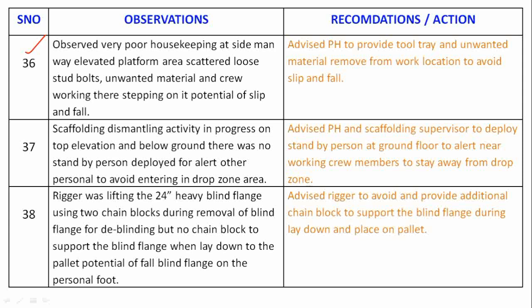Observation 36: Observed very poor housekeeping at the sideman way elevated platform area, with scattered loose studs, bolts, and unwanted material, with crew working there stepping on it, with the potential for slip and fall. Recommendation: Advise the permit holder to provide a tool tray and remove unwanted material from the work location to avoid slip and fall.